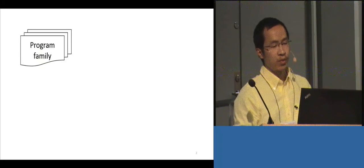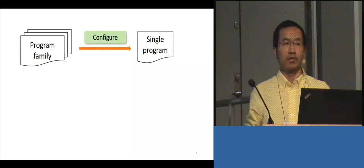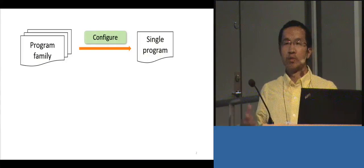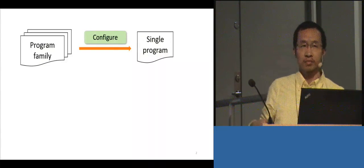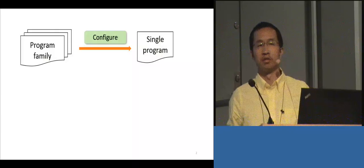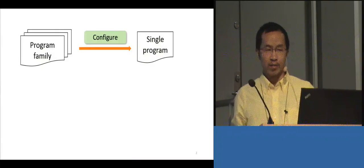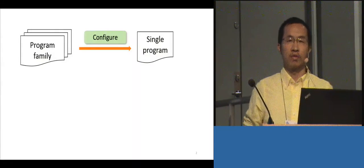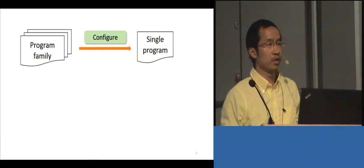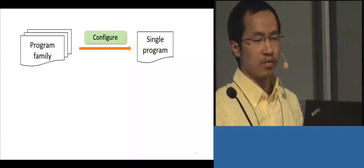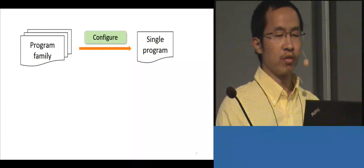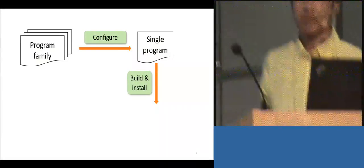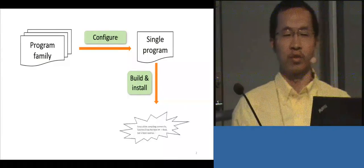For a program family, what we first do is configure the program family to get a single program, run it on our platform, and it depends on certain libraries. But since these program families are distributed in source code, we first have to build and install the program before we can use it. Unfortunately, this process breaks frequently.